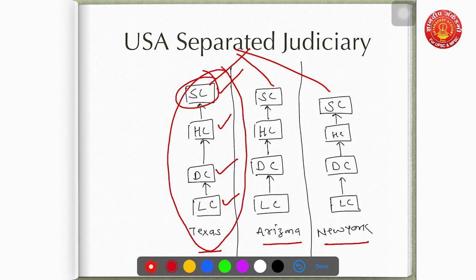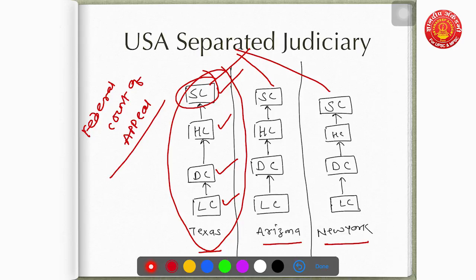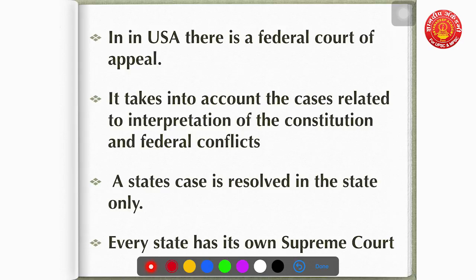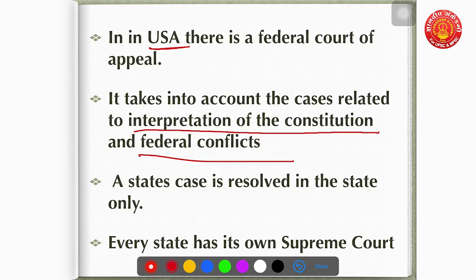At the same time, in America there is a separate highest court also called the Federal Court of Appeal. This Federal Court of Appeal does not take cases from state Supreme Courts — it is mainly concerned with cases of constitutional interpretation or federal conflict only. A state case is resolved in the state only. From a prelims point of view: in India there is a single judicial system for both center and state; in the USA there is a separate judicial system for center and state.